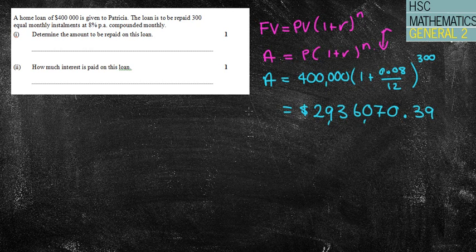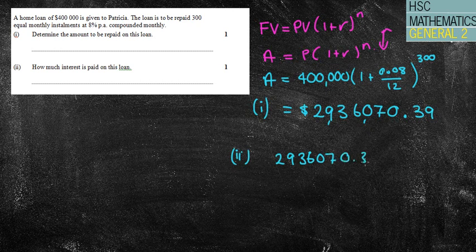That's meant to be repaid. So that's question one. And then question two says: how much interest is repaid on this loan? Well, we're going to then subtract the $400,000 from that amount.